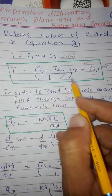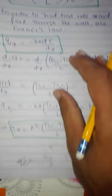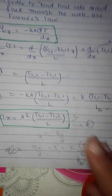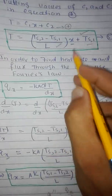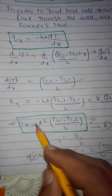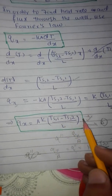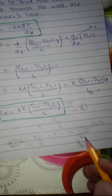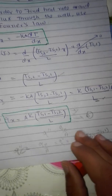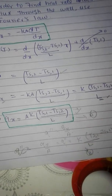Temperature changes in the x direction but heat rate and heat flux are constant through the wall. This is the temperature distribution through the plane wall, and these equations give the heat rate and heat flux through the wall. Please like and subscribe. Thanks.